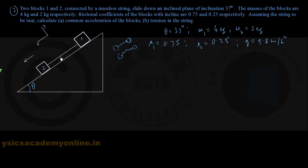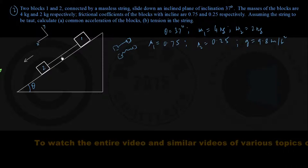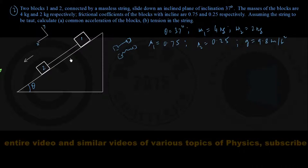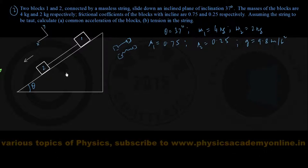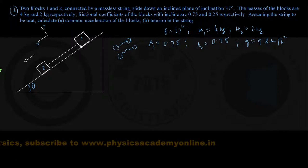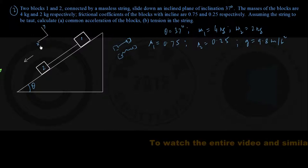On both blocks, there is the gravity force acting vertically downwards, and the normal contact force applied by the inclined plane acting perpendicular to it. The string provides a tension force acting down the incline on block 1 and up the incline on block 2, with the same magnitude. Since the surface is rough, frictional force acts up the incline on both blocks, opposing the downward motion.